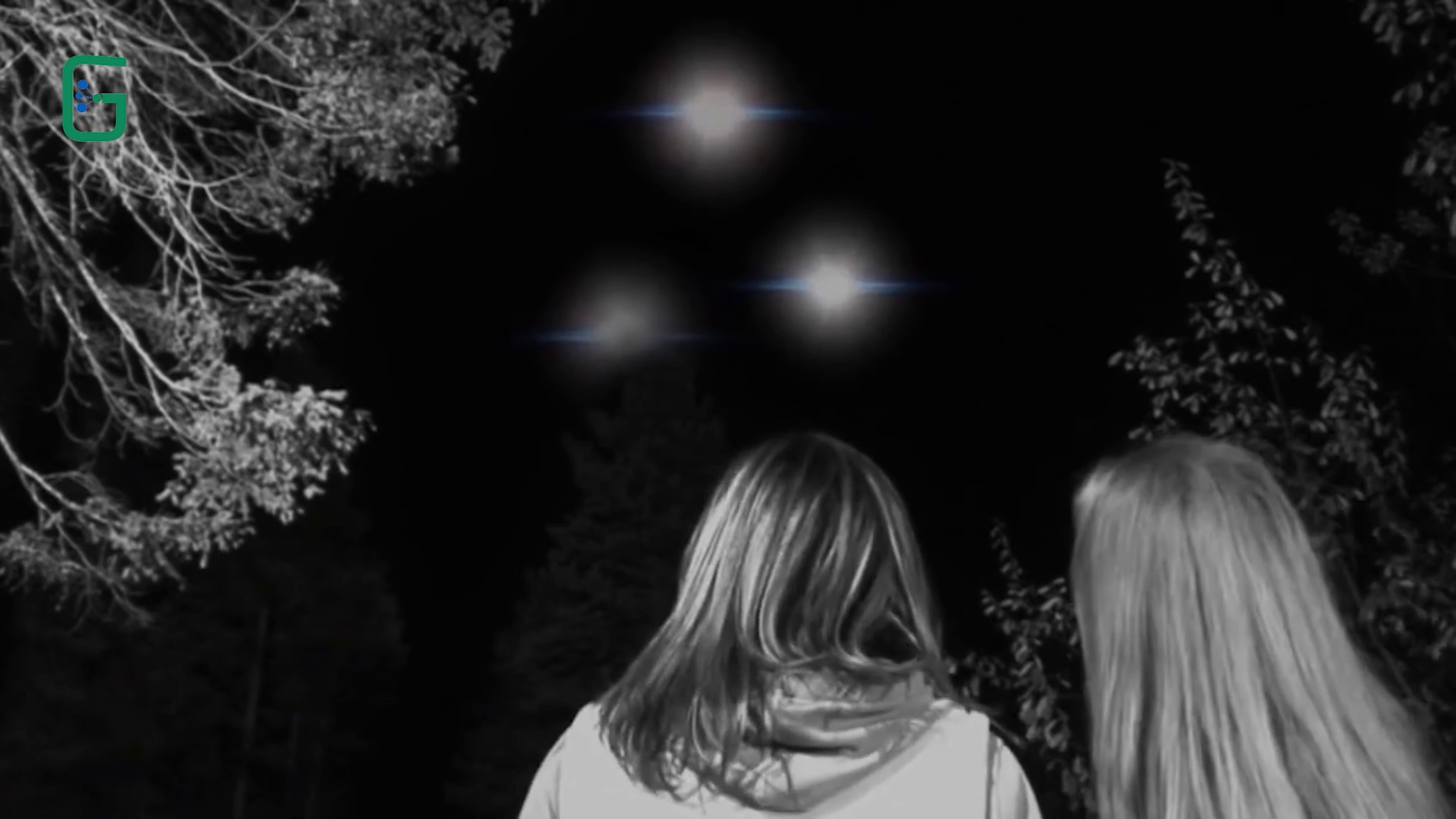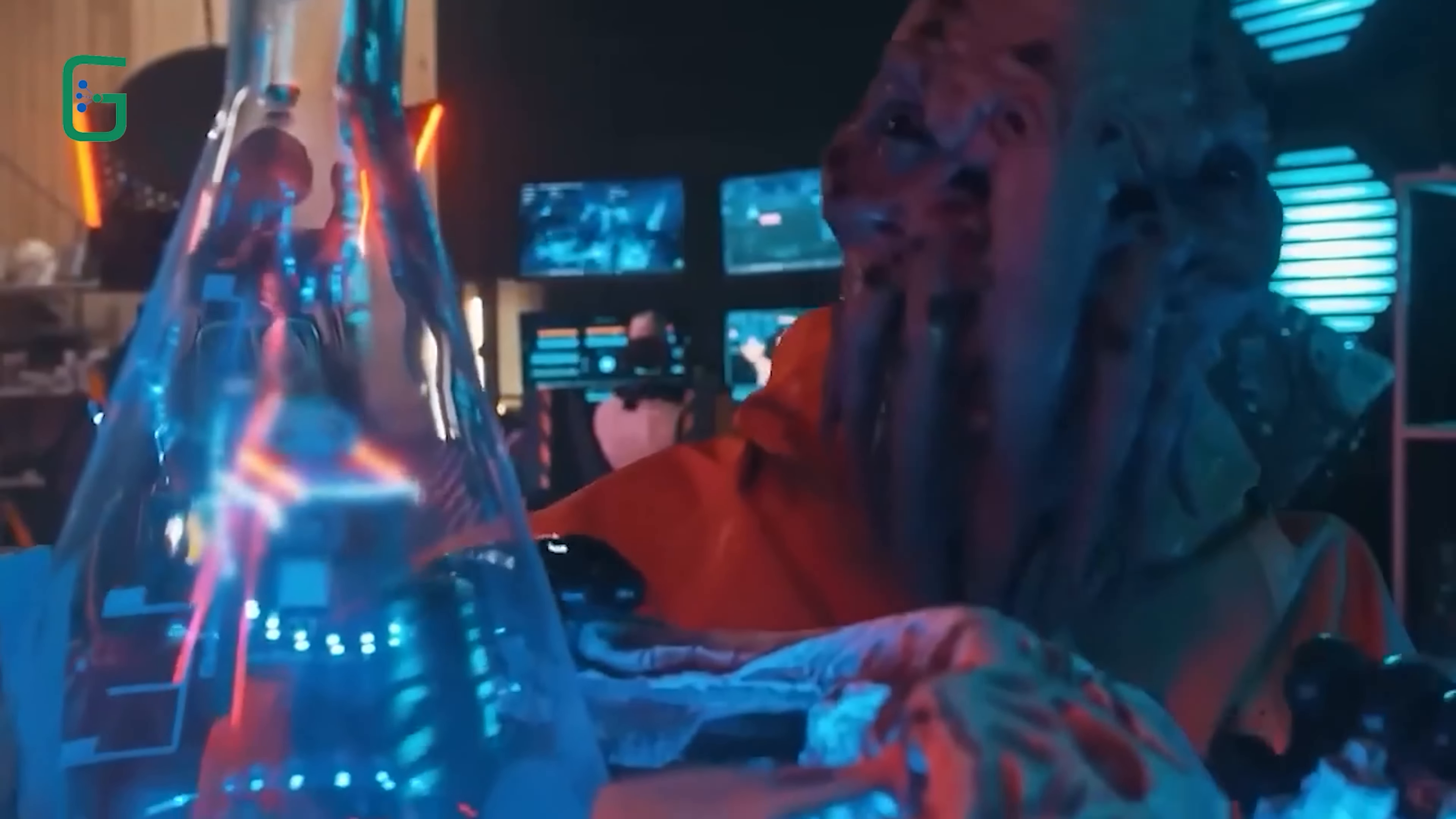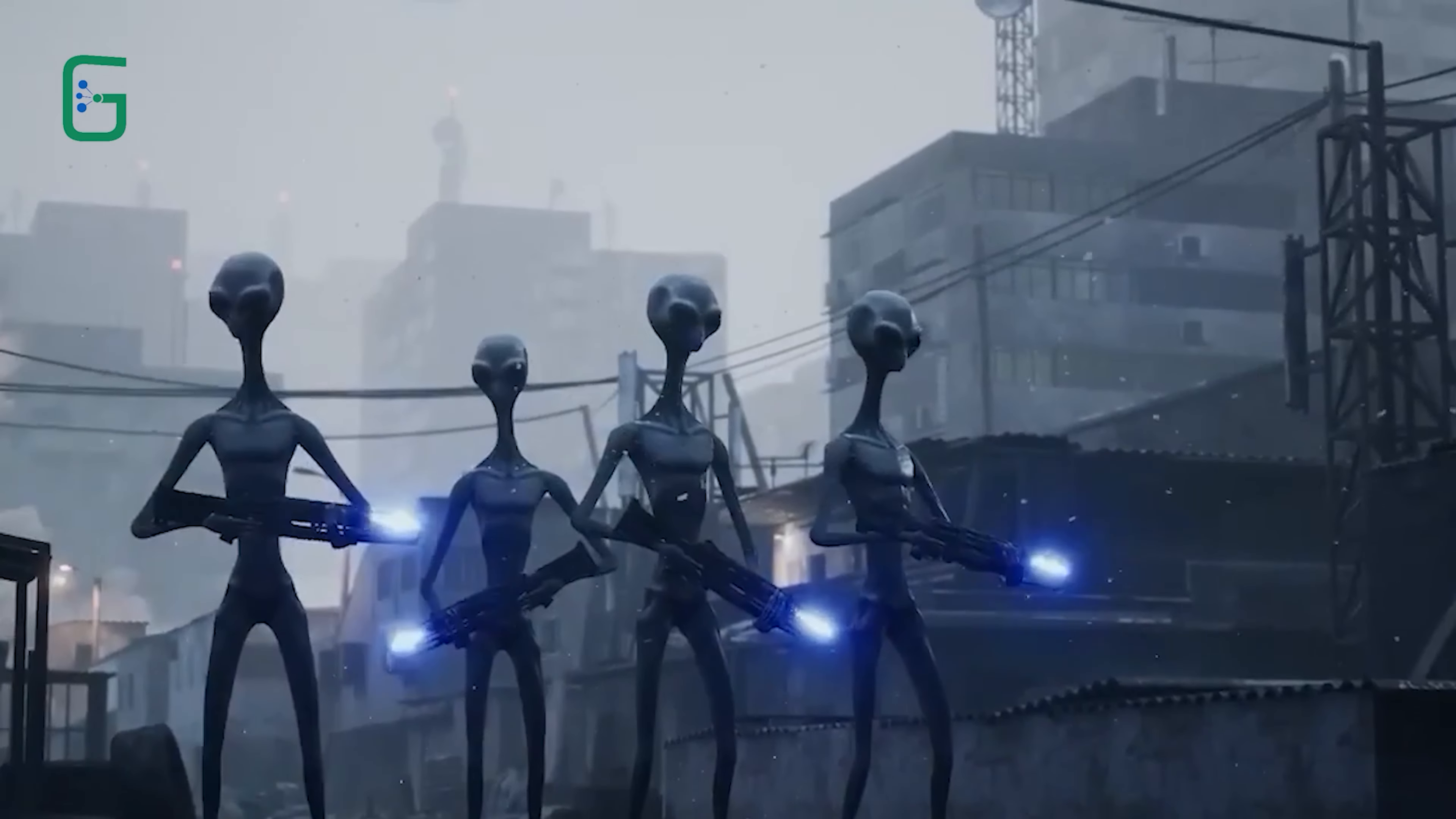Vennen had spent years studying the idea of different worlds and dimensions that we cannot see, but this new invention, called the interdimensional scope, was his biggest discovery yet. For a long time, Vennen thought that creatures living in other dimensions might be responsible for strange things that happen in our world, like weird scientific events or ghost sightings. He believed these creatures could move through our world without us noticing and could change things in ways we don't understand.